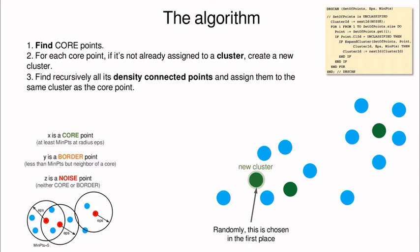Step number three we're going to connect recursively all the density connected points meaning that all the points which are at a distance lower than epsilon are going to belong to that cluster. In this case this point, this, this, this and that's all.